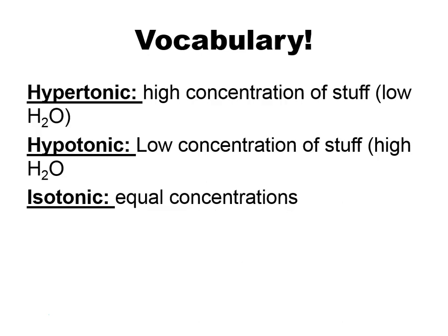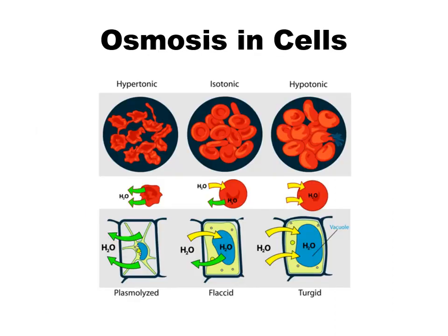Some vocabulary before we go any further: hypertonic, hypotonic, and isotonic. Hypertonic is where you have a high concentration of stuff, which means low water. Hypo is low stuff and high water. Iso is going to be equal concentrations. When you look at real cells, this idea of the environment is going to be really important, because hypertonic, isotonic, and hypotonic have really different effects on different types of cells.